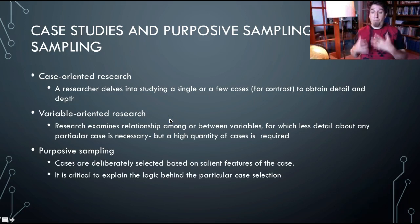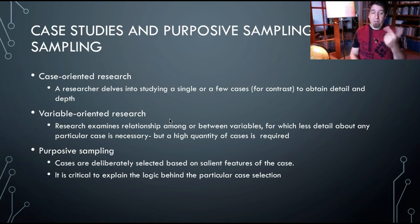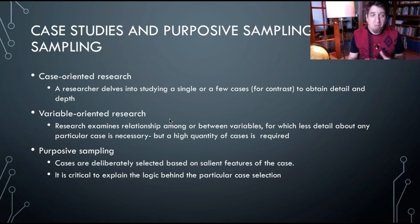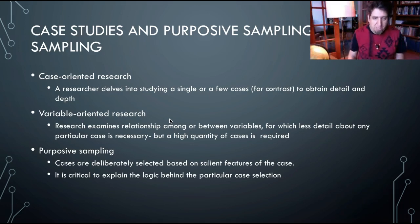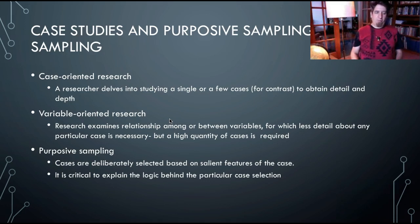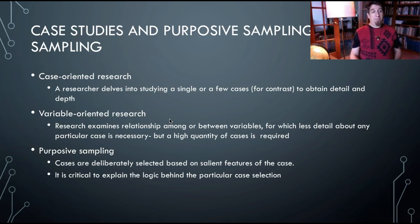Case-oriented research is going to use purposive sampling. The sampling is not random at all. The cases are deliberately selected based on the salient features of a case — something you would not want to do if you want to establish relationships between variables, because there you are not selecting cases individually. You want random selection generally. So it's critical for anybody doing this type of research to explain why their cases are selected, which means random selection is not the way to go if you're doing a case study.